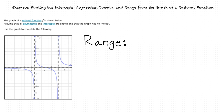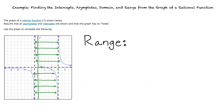We can think of the range of a function as the set of all numbers that appear as y-coordinates of points on the graph. We see in this graph that for any value along the y-axis, there exists at least one point along the graph that has that y value. Because of this, we conclude that the range of f is all values from negative infinity to positive infinity.